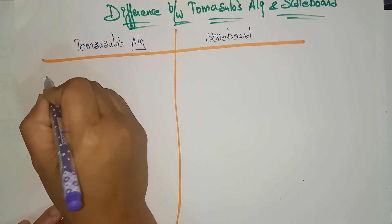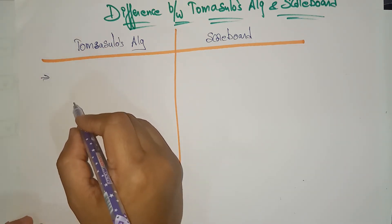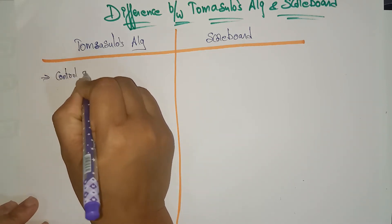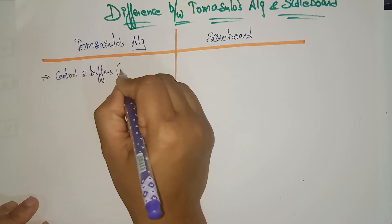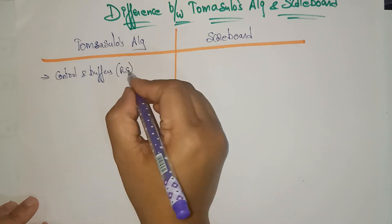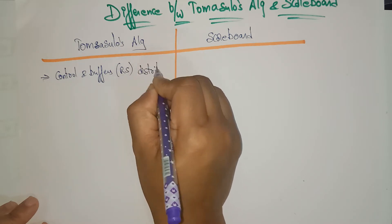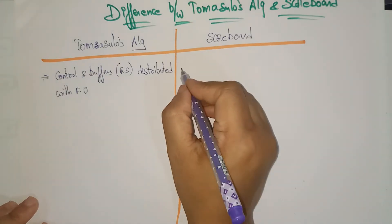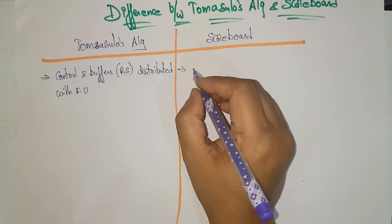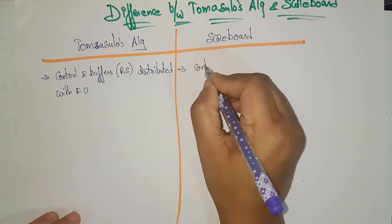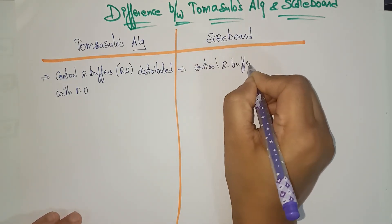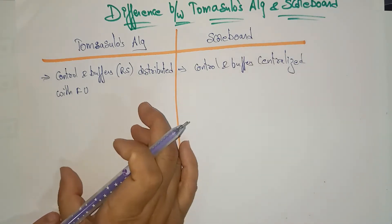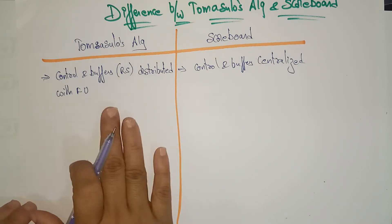In Tomasulo's algorithm, the reservation stations — which are the control and buffers — are distributed with the functional units. But in the scoreboard, the control and buffers are centralized. So in the scoreboard technique the control and buffers are centralized, whereas in Tomasulo's algorithm they are distributed with the functional unit.